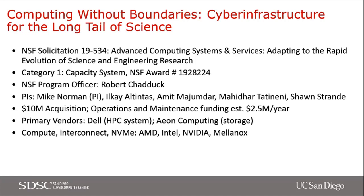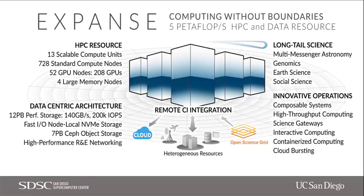Expanse is basically a result of an NSF award — a category one capacity system. The PI on the project is Mike Norman, with many co-PIs. The primary vendor for the system is Dell, Aon for storage, and we have processors from AMD, Intel processors on the GPU node host, NVIDIA GPUs, and Mellanox interconnect. It's a system made up of 13 scalable units, with 728 standard compute nodes, 52 GPU nodes with four GPUs each for a total of 208 GPUs.